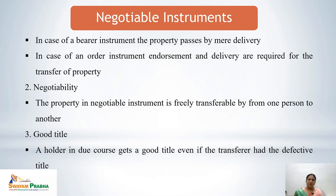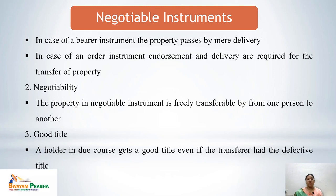In case of a bearer instrument, property passes by mere delivery. In case of an order instrument, endorsement and delivery are both required for the transfer of property. The second characteristic is negotiability: the property must be freely transferred from one person to another without any condition — the property should be negotiated to the transferee freely.